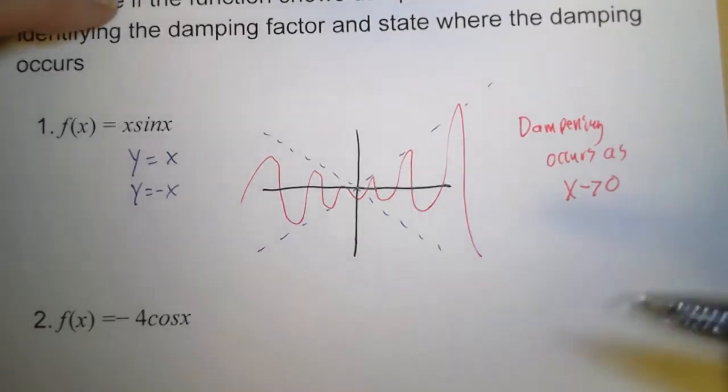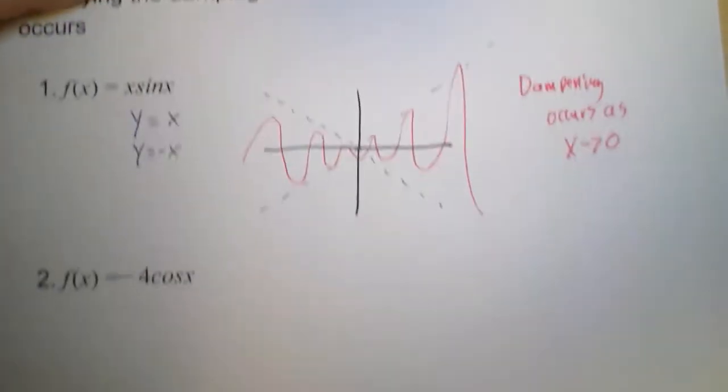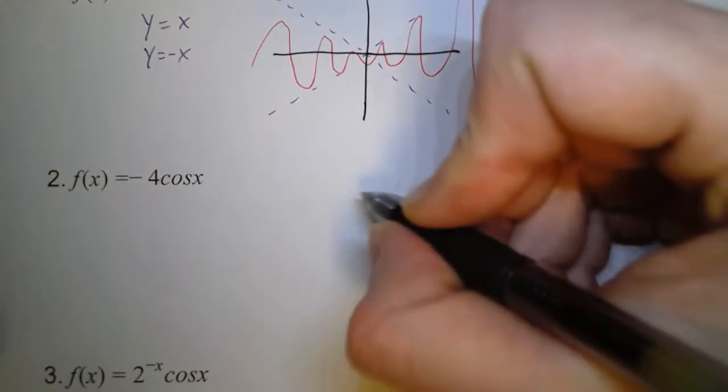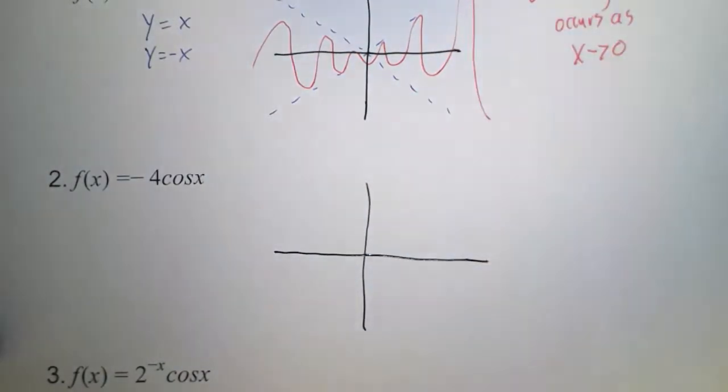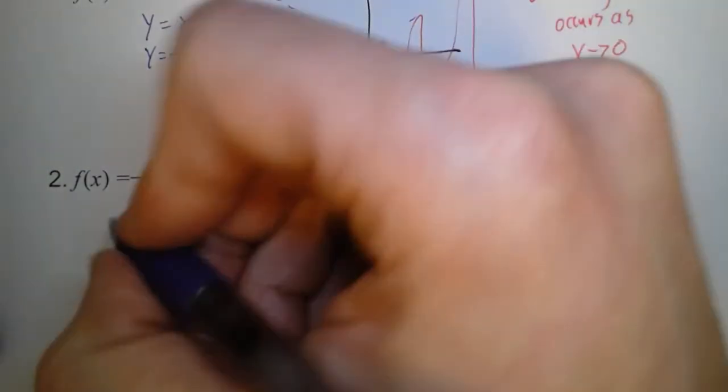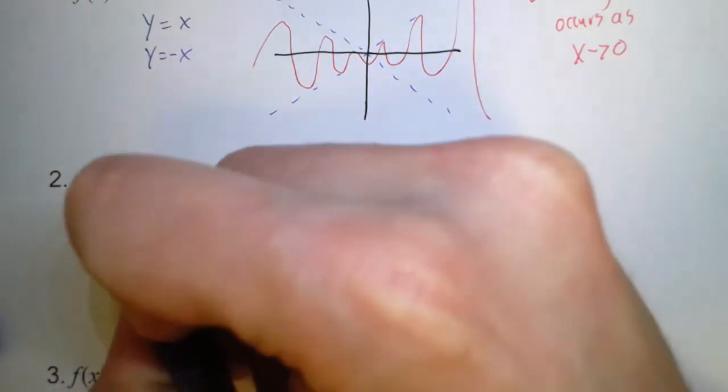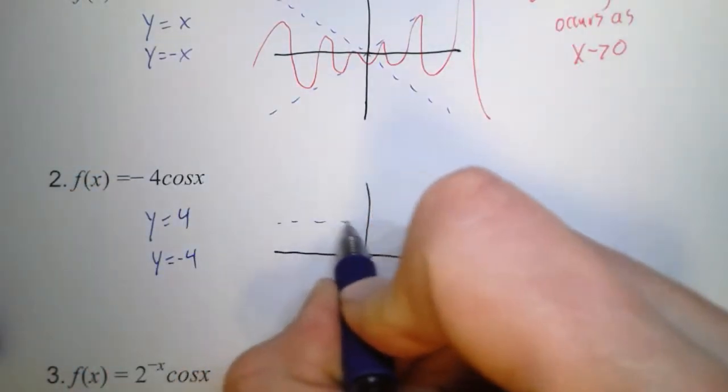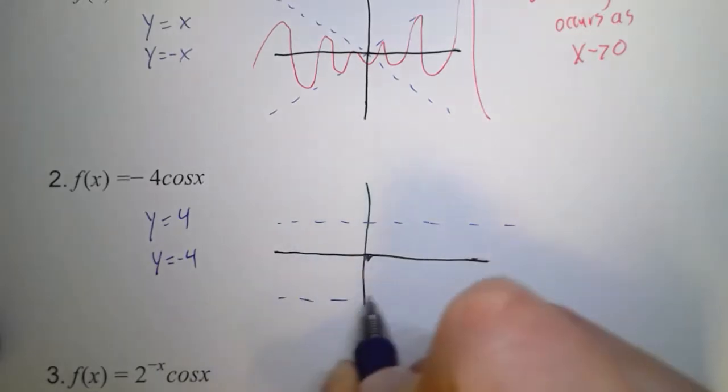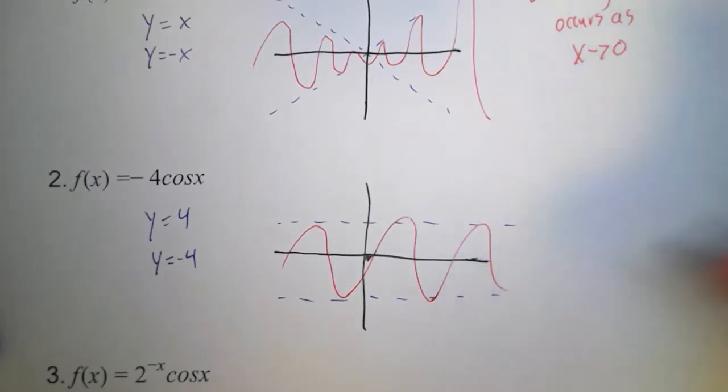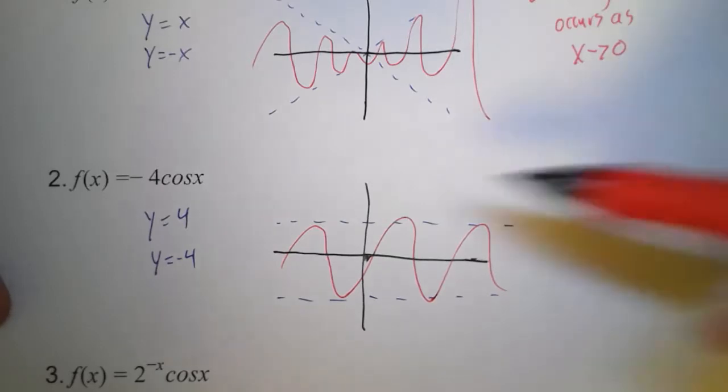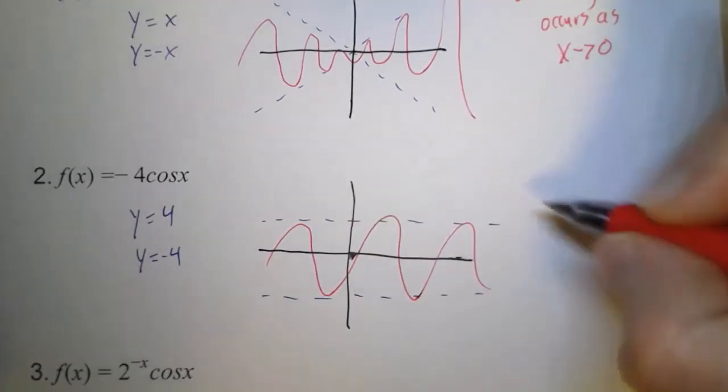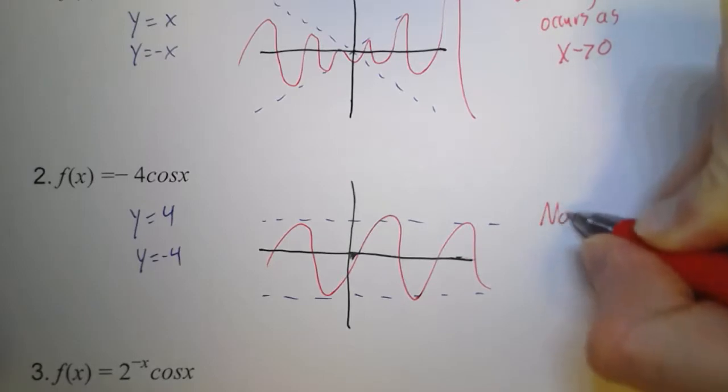This is all we're doing is just identifying when the dampening occurs, if it occurs at all. So, looking at the next one, we have negative 4 cosine of x. So our boundaries, those are going to be y equals 4 and y equals negative 4. Now, notice y equals 4 and y equals negative 4 are horizontal lines. So that means the amplitude is going to be kept at a constant. So with this one, there is no dampening.